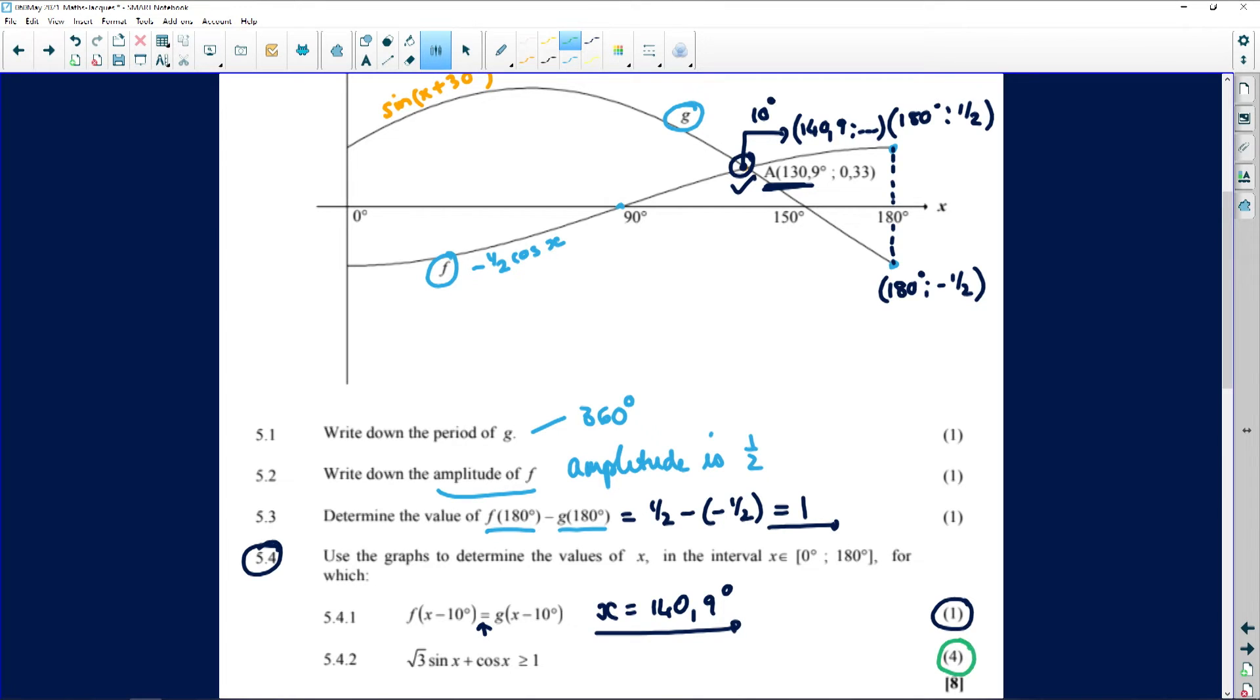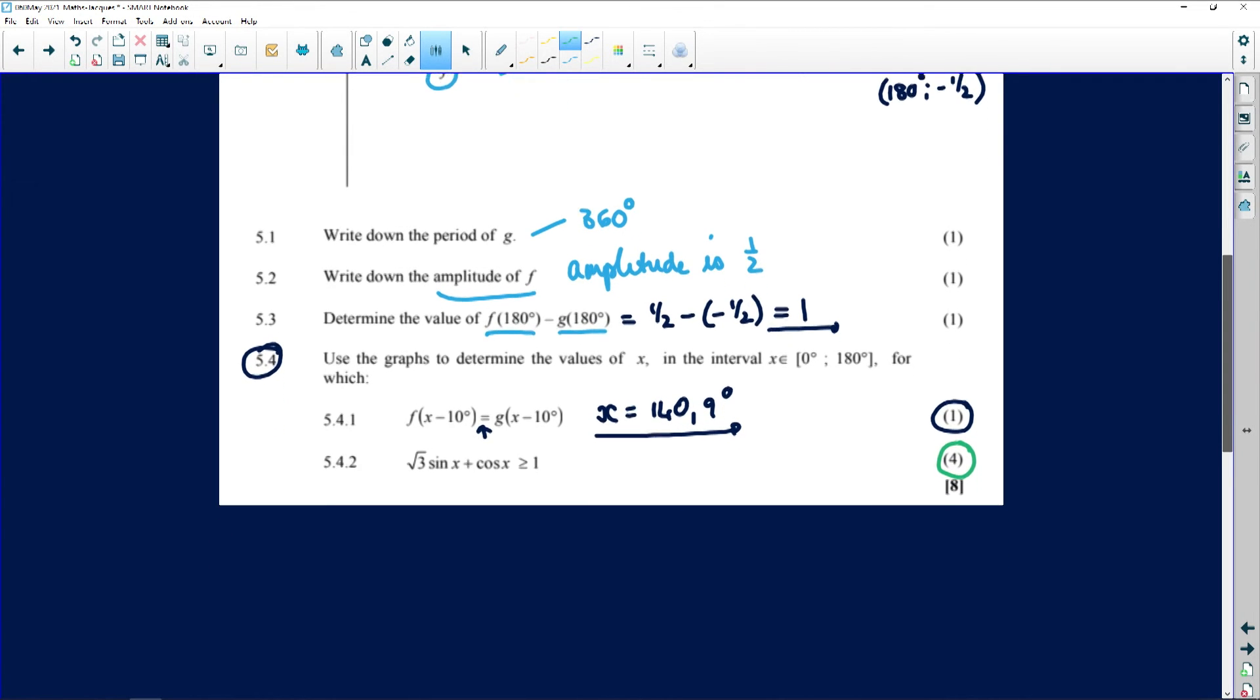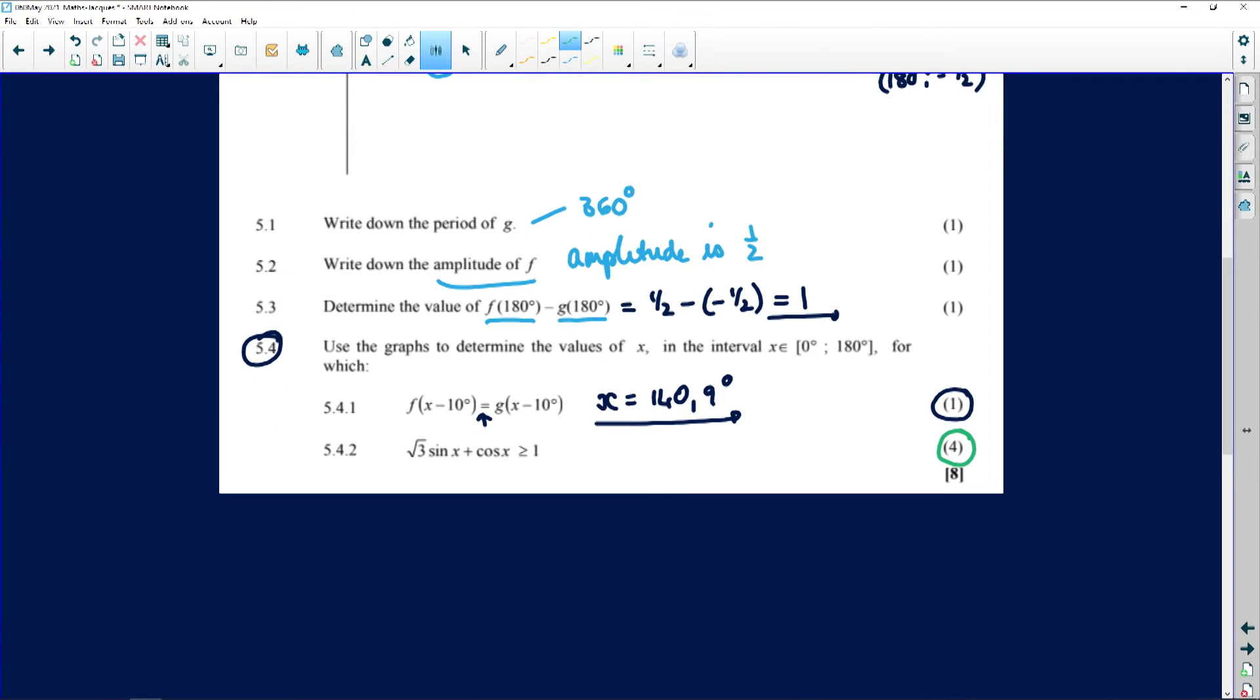The last one is nice. I love this one. For four marks. The square root of three times the sine of x plus the cosine of x must be bigger and equal to one. Now folks they say use your graphs. So there's something on this graph that you can draw on and put into this problem and see if it works.